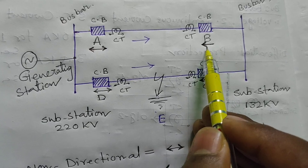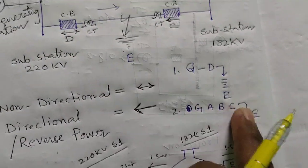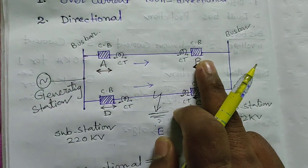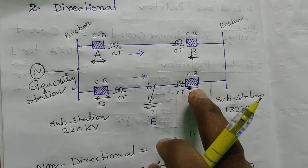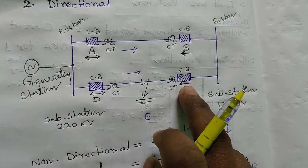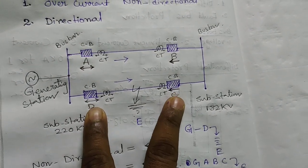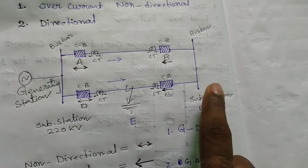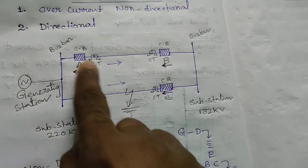In the second case, the power is flowing from this direction such that breaker B will not trip, but breaker C will trip because the power flow direction matches the directional relay symbol direction. So in case of a fault, both breaker D and breaker C will trip — breaker D at the 220KV generating switchyard and breaker C at the 132KV switchyard — isolating the faulty section from the healthy section.